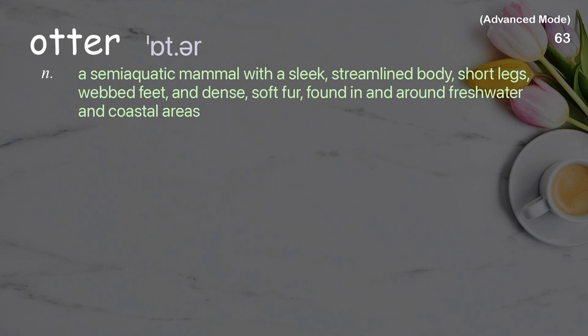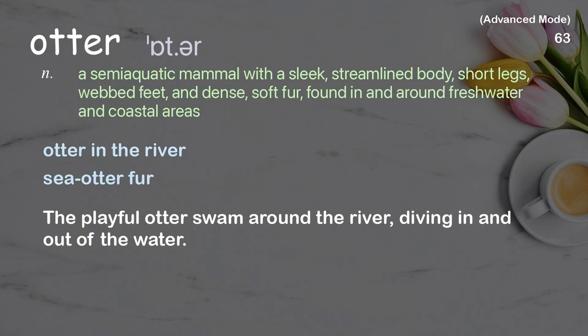Otter: A semi-aquatic mammal with a sleek, streamlined body, short legs, webbed feet, and dense, soft fur, found in and around freshwater and coastal areas. Examples: Otter in the river, Sea otter fur. The playful otter swam around the river, diving in and out of the water.